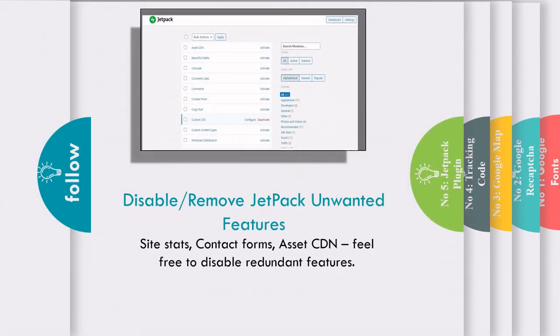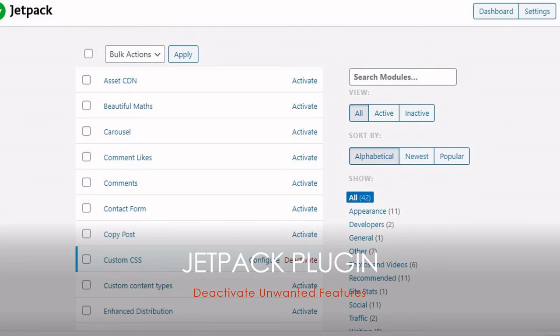Number five on my list is the Jetpack plugin. Jetpack is a default WordPress plugin with many features. If you are unaware of how it works, you are definitely killing your website performance. Jetpack has many features involving third-party services such as Gravatar, site stats, site backup, SEO tools, site verification, and more — the list is very long. If you are using separate plugins for any of these features, you are adding redundant functionality. So be careful and deactivate all redundant features in Jetpack.